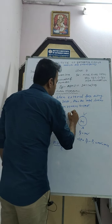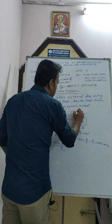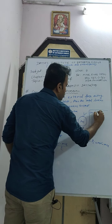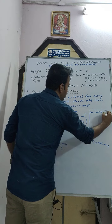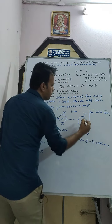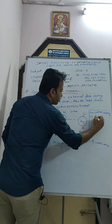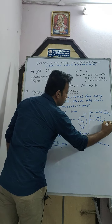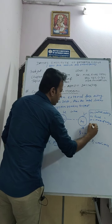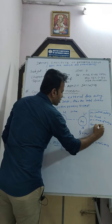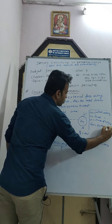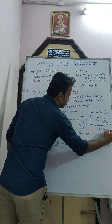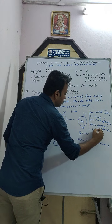Here, u is the initial velocity, v is the final velocity, m is the mass of body A, F_ext is the external applied force, and t is the time.